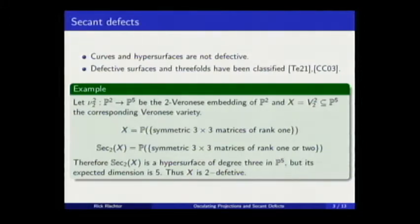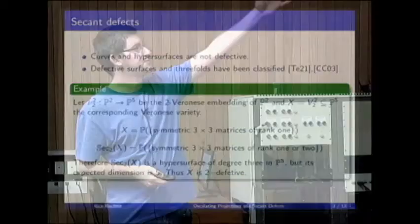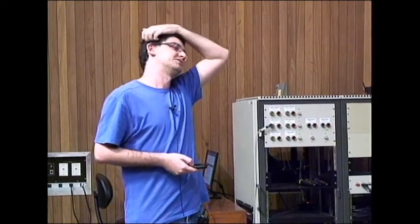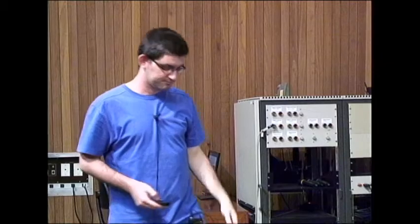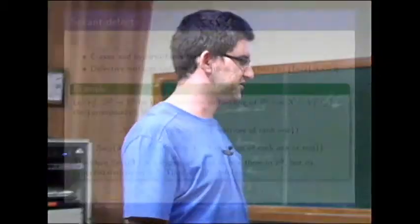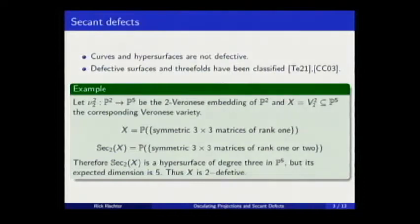This problem of classifying defective varieties is very complicated. It's only known up to threefolds completely. So it's not a realistic thing to expect to classify all of them for the time being. What people do is try to do this in some classes of varieties, some very few classes.